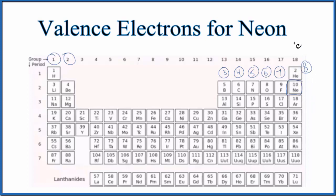Because of that, these all have eight valence electrons, with the exception of helium. Helium only has two, but these here have eight valence electrons. So neon has eight valence electrons.